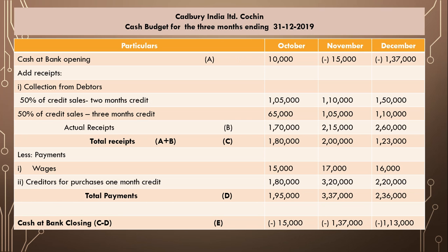For wages, no specific lag information is given, so wages are paid in the same month as incurred. October = 15,000; November = 17,000; December = 16,000. Adding wages and creditors, total payments are: October = 1,95,000; November = 3,37,000; December = 2,36,000.